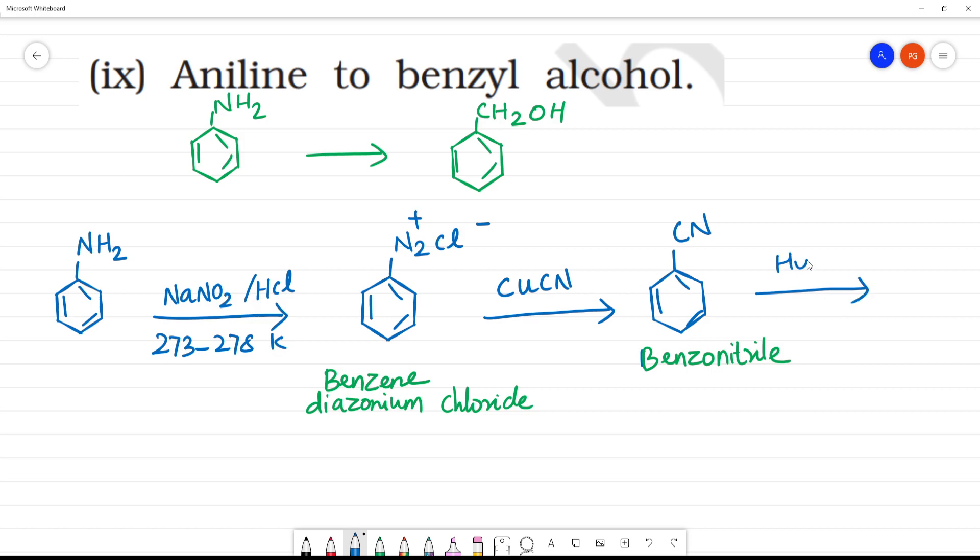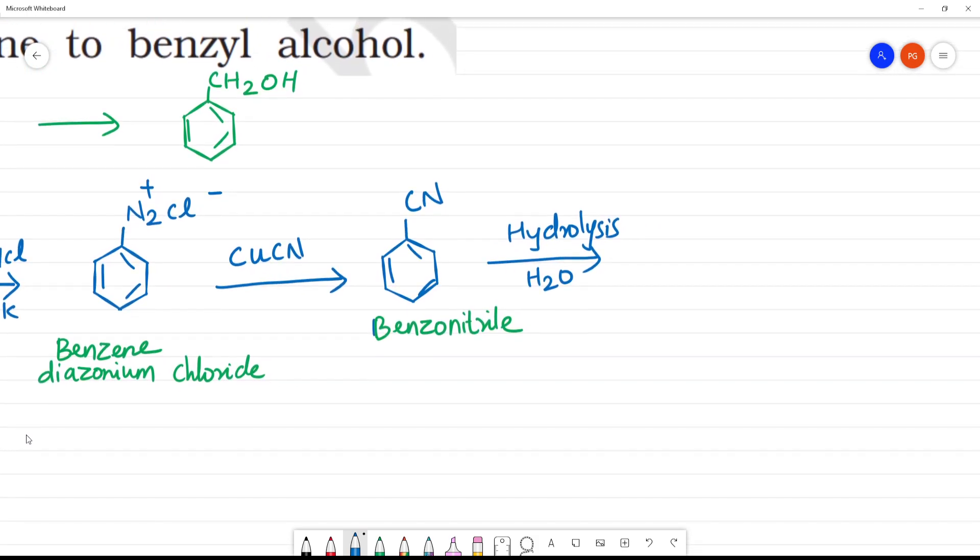Next, we are hydrolyzing. Hydrolysis means adding water. CN will change to COOH. The CN will be changing to COOH. So what is this? This is benzoic acid.